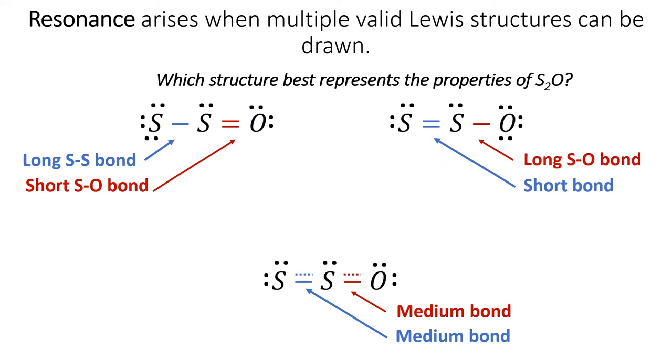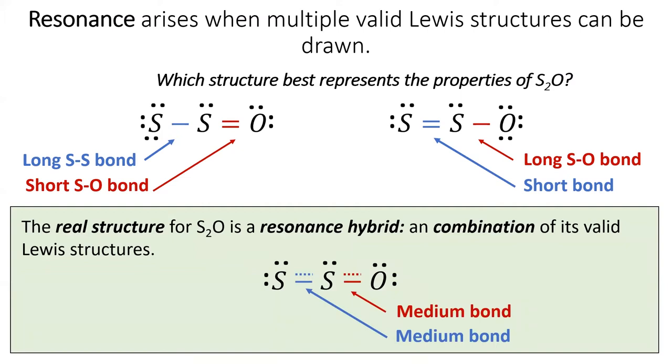What this means is that neither of the two Lewis structures at the top is a good representation of the actual S2O molecule. In fact, the real structure of S2O is a combination of its valid Lewis structures. We call this combination a resonance hybrid.